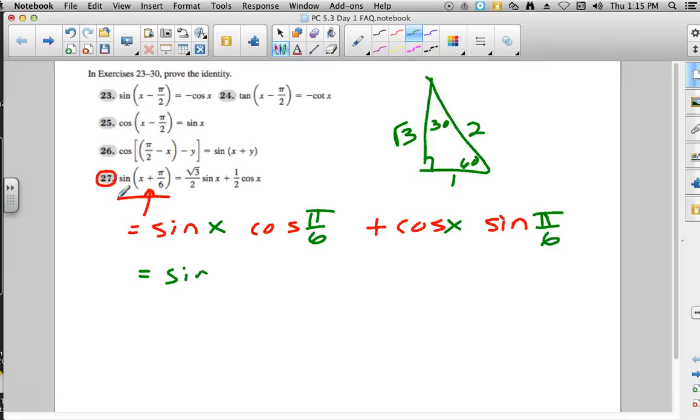And we'll notice, cosine being adjacent over hypotenuse for 30 degrees would give us the square root of 3 over 2. And we also use the sine of pi over 6, which would be 1 half.